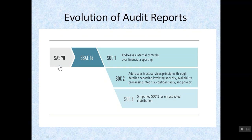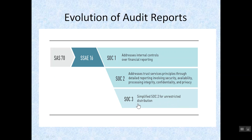Here you can see the evolution path of audit reports. SAS 70 was replaced by SSAE 16 in 2011. SOC 1 report addresses internal control over financial reporting. SOC 2 report addresses trust service principles, which will be covered in the next slide. SOC 3 report is a simplified SOC 2 report with unrestricted use, meaning it is available to the public.